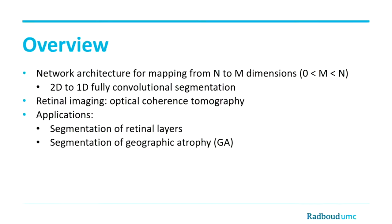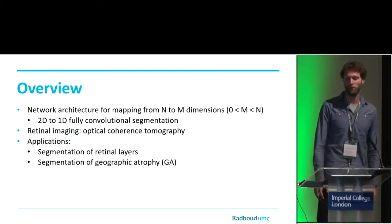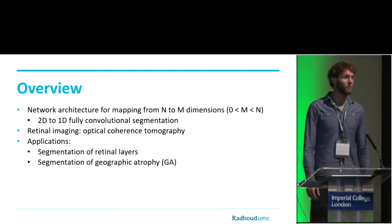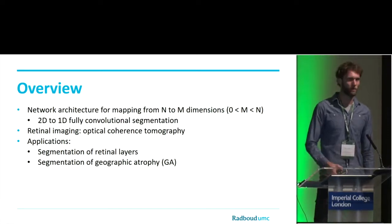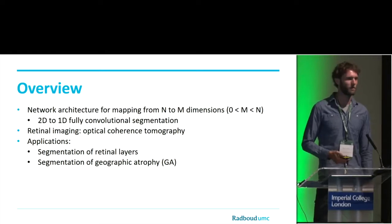Good afternoon everyone. What I want to present today is a new neural network architecture that performs segmentation in a subset of the input dimensions. I depicted here N to M dimensions, but more specifically I will focus on the case where we go from two-dimensional input and produce one-dimensional output. I think it may sound a bit uncommon at first, but in retinal imaging, especially in optical coherence tomography or OCT, there are interesting applications — two of which I would like to highlight today: the segmentation of retinal layers and segmentation of geographic atrophy.